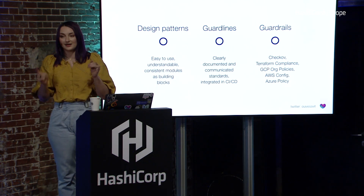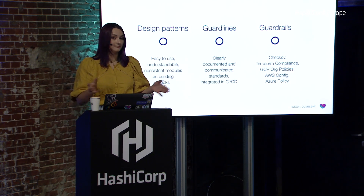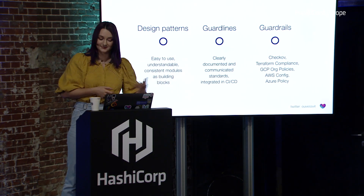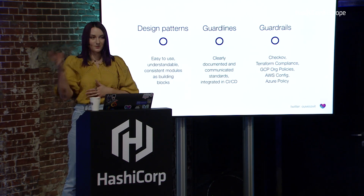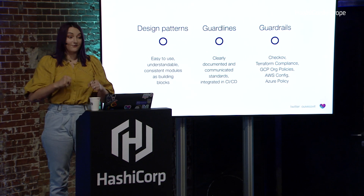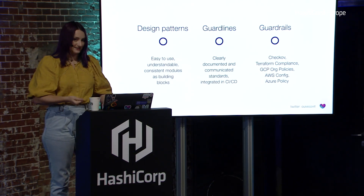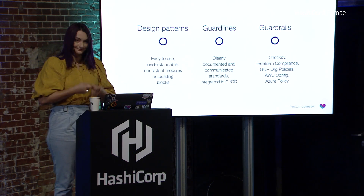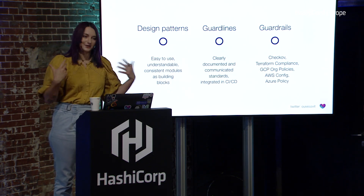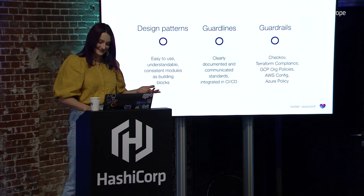Guardrails are things that enforce those guard lines. You can have Checkov and Terraform Compliance in your CI/CD to check your Terraform code for compliance with the guard lines. You can have GCP Org Policies, AWS Config, and Azure Policy to enforce those security rules so that nobody can create an S3 bucket with public access — and have a system that is well-maintained, well-oiled, self-serviceable, but stays compliant and stays consistent.